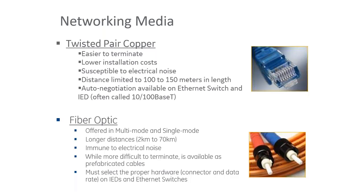Fiber optic gives us the ability to go longer distances — hundreds of kilometers depending on the type of fiber. It is immune to electrical noise, whereas shielded twisted pair RJ45 reduces susceptibility to noise but doesn't eliminate it completely. Going to fiber completely eliminates noise susceptibility. However, fiber is harder to terminate and work with than RJ45, since it's glass and requires special tools and equipment.